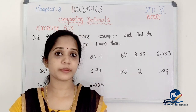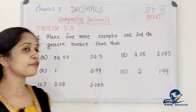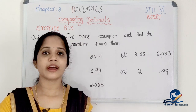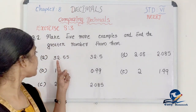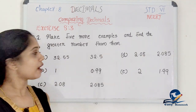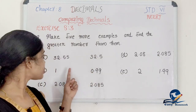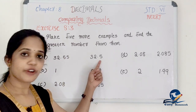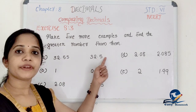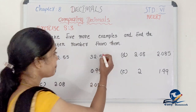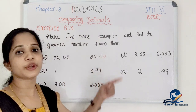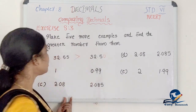Now exercise 8.3, question 2: make 5 more examples and find the greater number. First, compare 32.55 and 32.5. Left side: 32 and 32 — equal. Tenths place: 5 and 5 — equal. Hundredths place: 5 and 0 (no digit means 0). 5 is greater than 0, so 32.55 is the greater number.